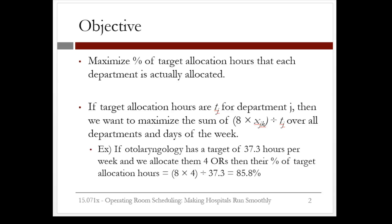Let's break this down. For example, if otolaryngology has a target of 37.3 hours per week, that means T_j equals 37.3, and we allocate them four operating rooms, then their percent of target allocation hours is equal to 8 times 4 — that is, they got 32 hours — divided by the 37.3 hours they asked for. So they got 85.8% of what they wanted.